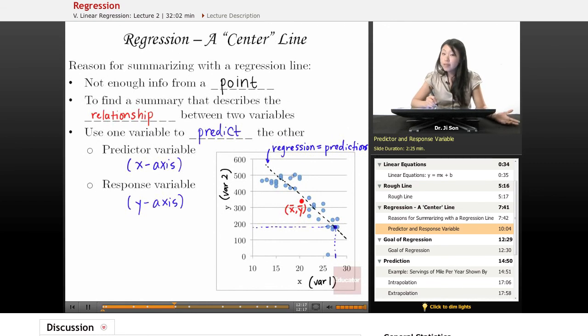Now, notice that a lot of our points do not lie on the prediction line. And so there's a little bit of difference between the actual data and the predicted data.